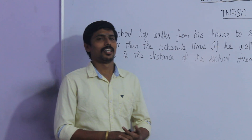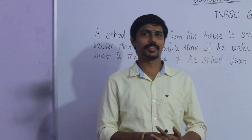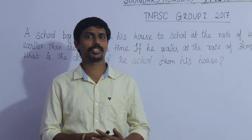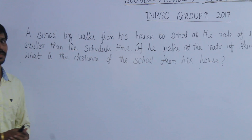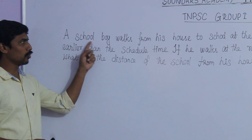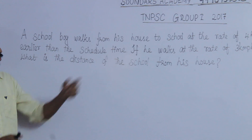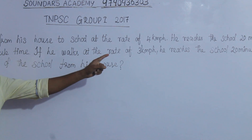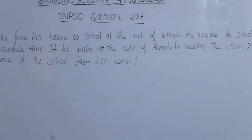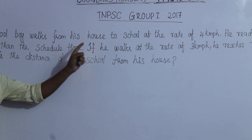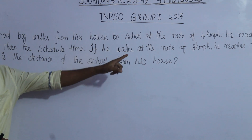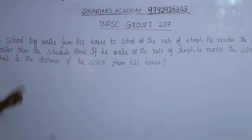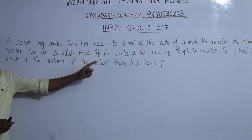Hi everyone. TNPC 2017, February 11th. A schoolboy walks from his house to school at the rate of 4 km per hour. He reaches the school 20 minutes earlier than the scheduled time. If he walks at the rate of 3 km per hour, he reaches the school 20 minutes late. What is the distance of the school from his house?